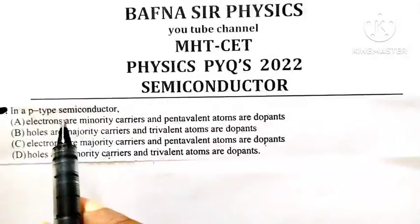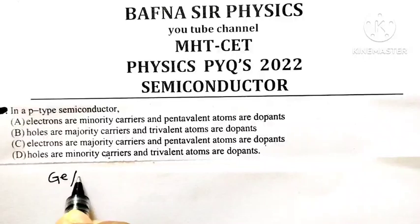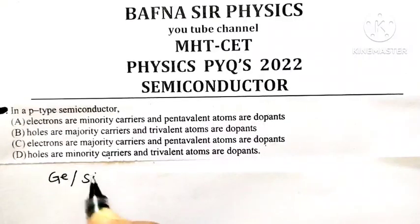In a P-type semiconductor, remember, P-type semiconductor can be constructed by using either a pure germanium or silicon crystal.